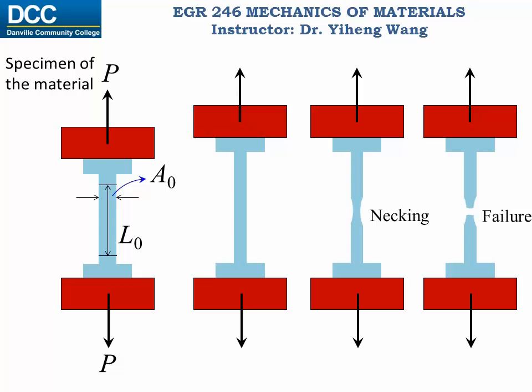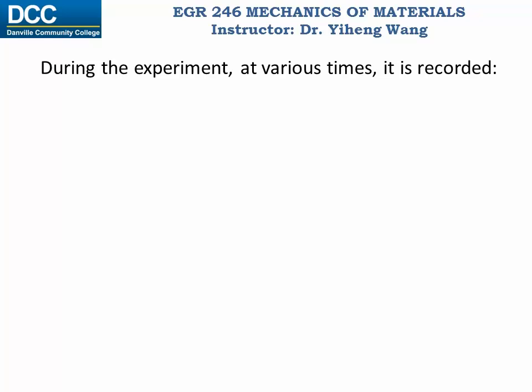Of course you can do a similar compressive testing experiment, and instead of pulling the specimen, the machine will compress the specimen until it fails. During the experiment, at different time points, the machine records the loading applied. From here we can calculate the average normal stress: sigma equals the tensile force divided by the cross-sectional area.